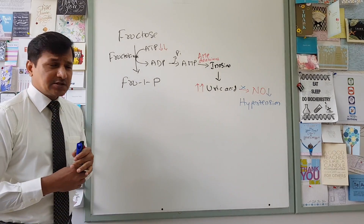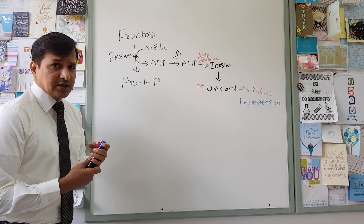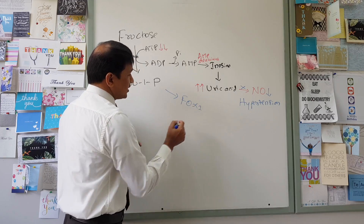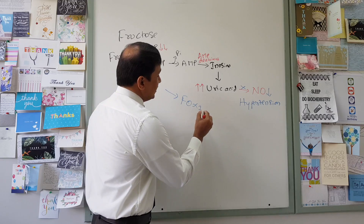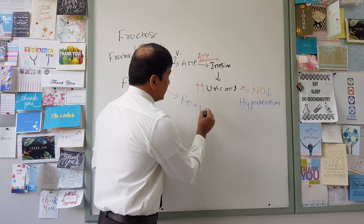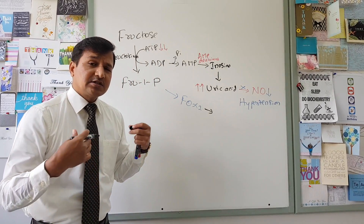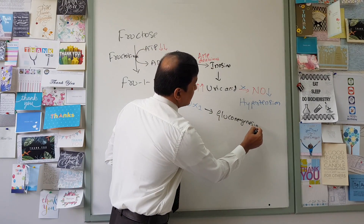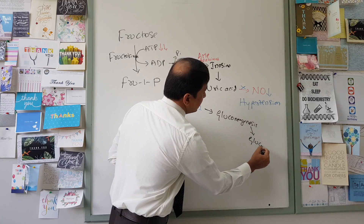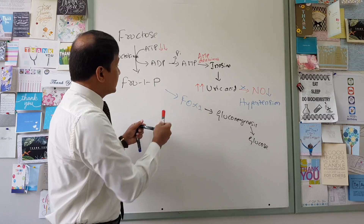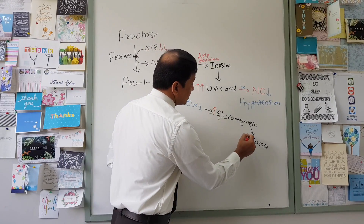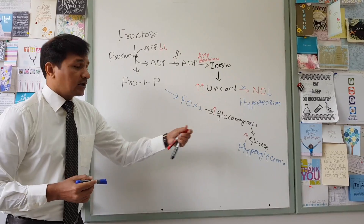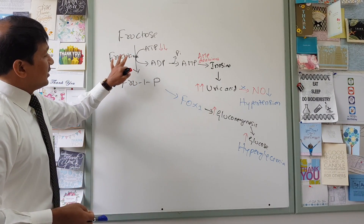Fructose-1-phosphate also activates a signaling molecule called FOXO1. This FOXO1 signaling has been noted to increase gluconeogenesis — the synthesis of new glucose molecules in the liver. As gluconeogenesis increases, more glucose is released into the blood, contributing to hyperglycemia, which is another component of metabolic syndrome.